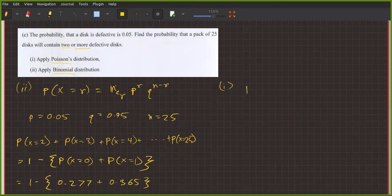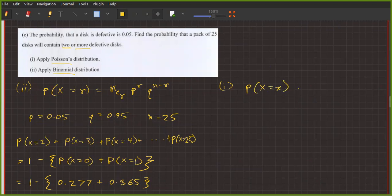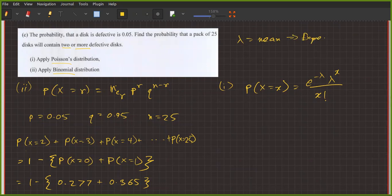P(X=x) equals e to the power minus lambda times lambda to the power x divided by x factorial. So lambda is basically the parameter of the distribution, the mean. Lambda equals the mean, which is the same thing as the expectation. And lambda also equals the variance.